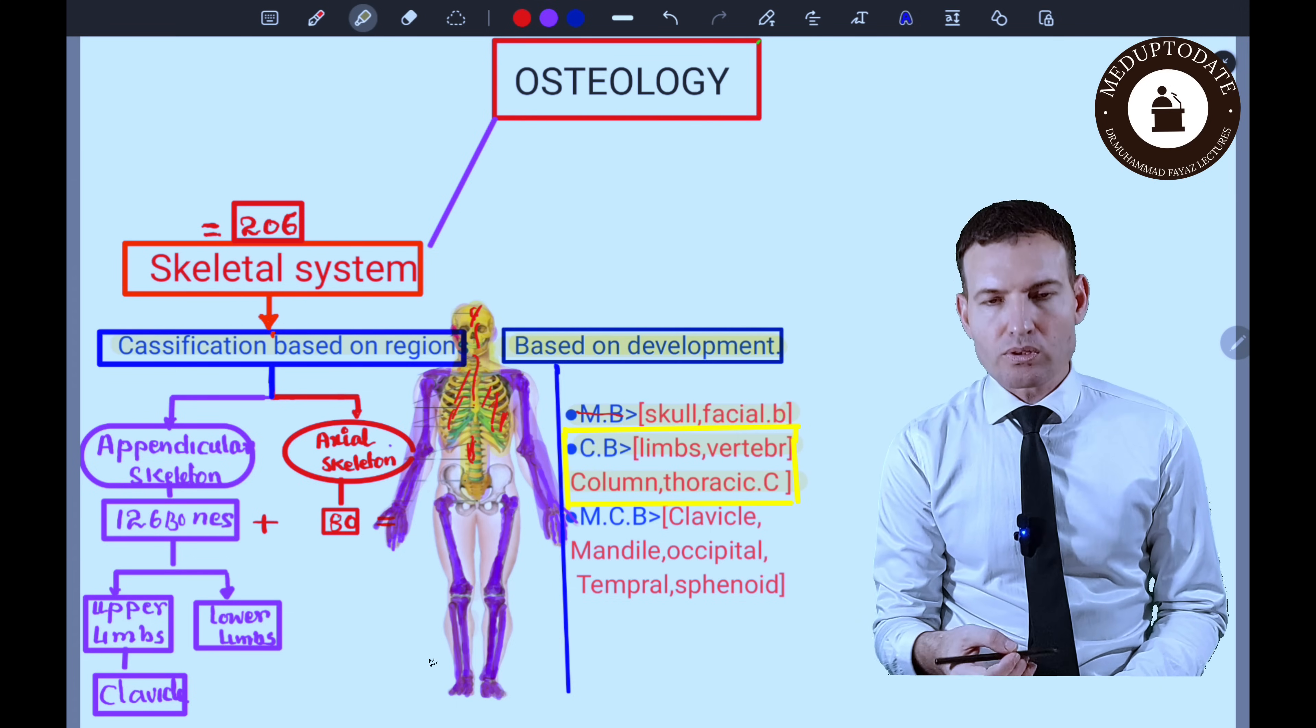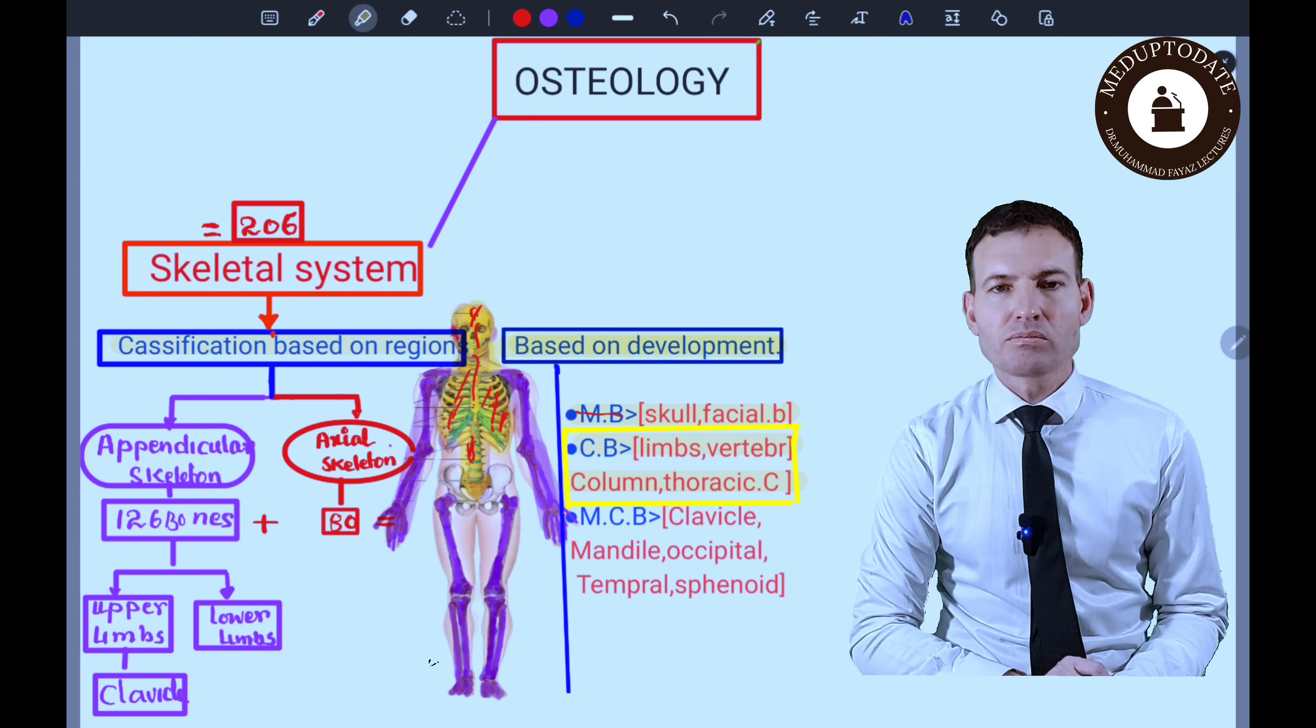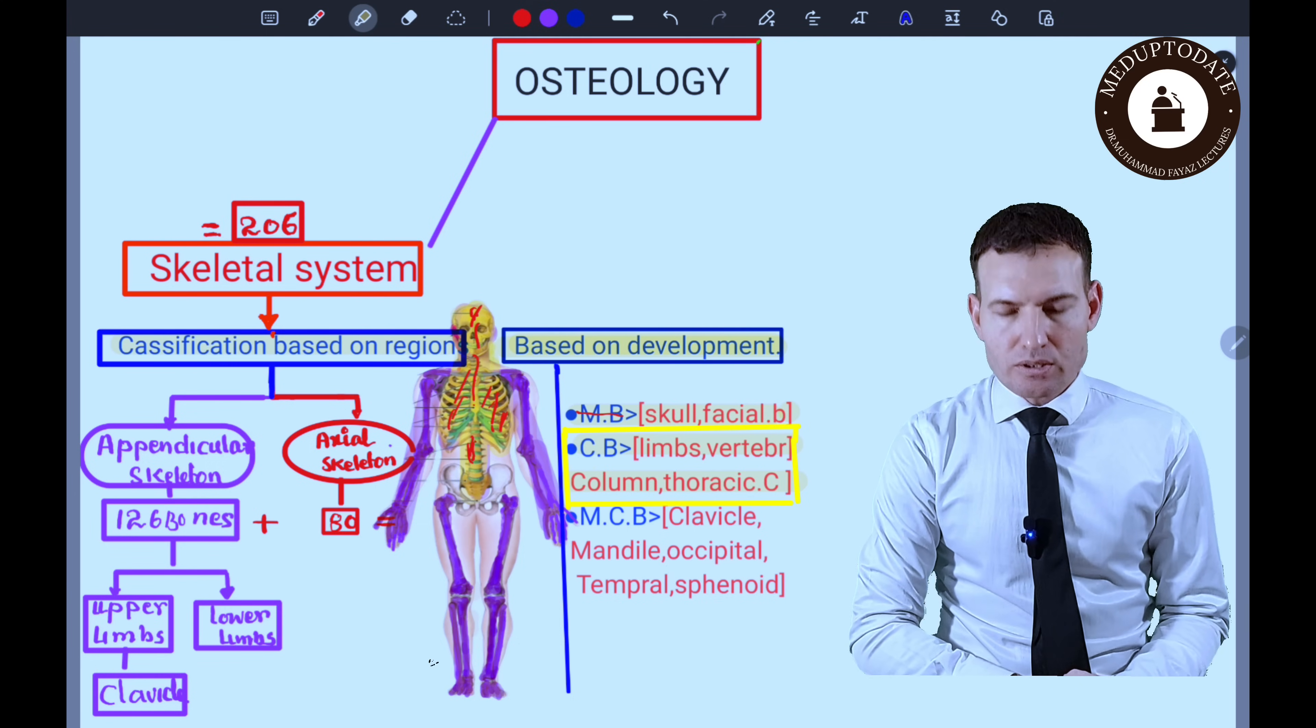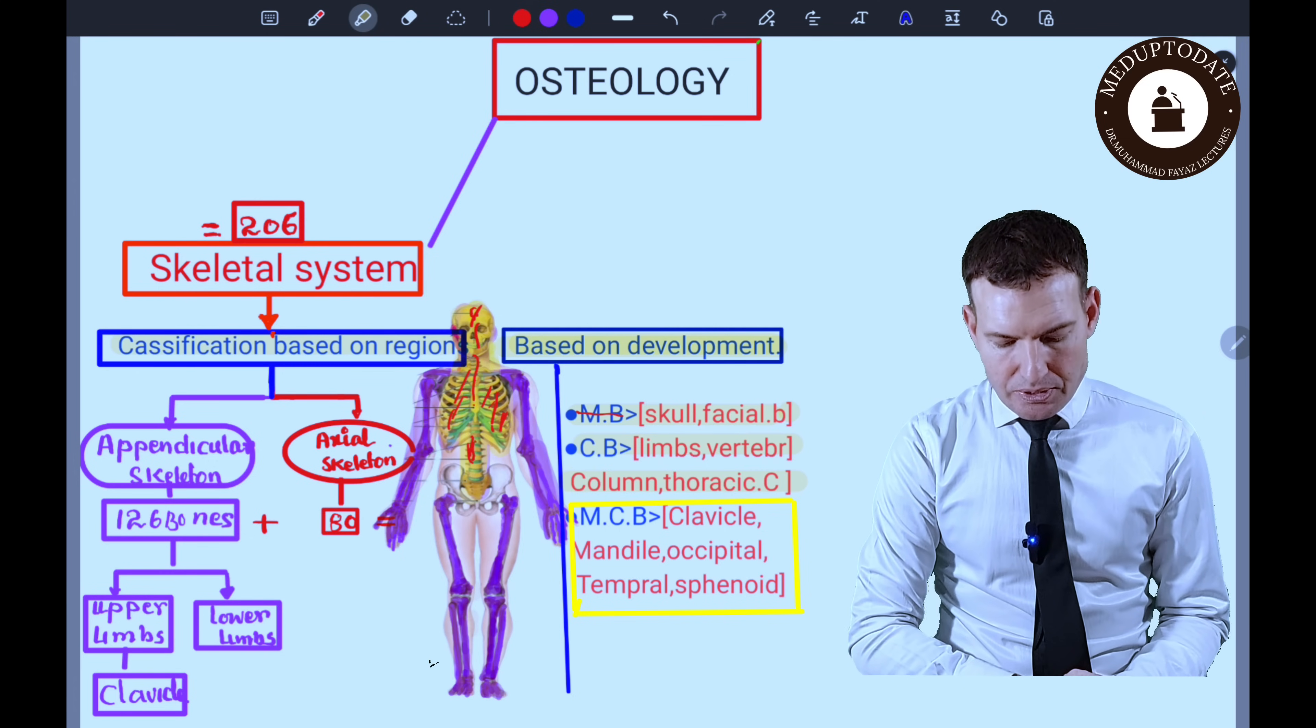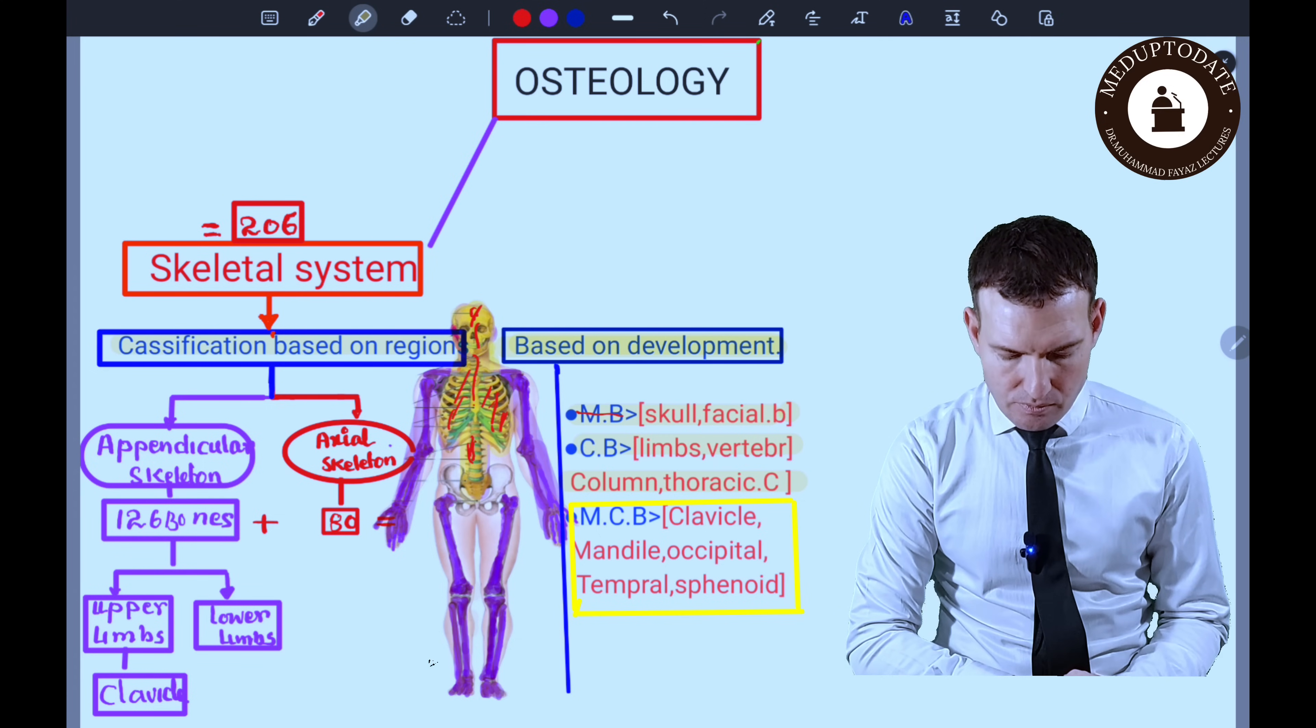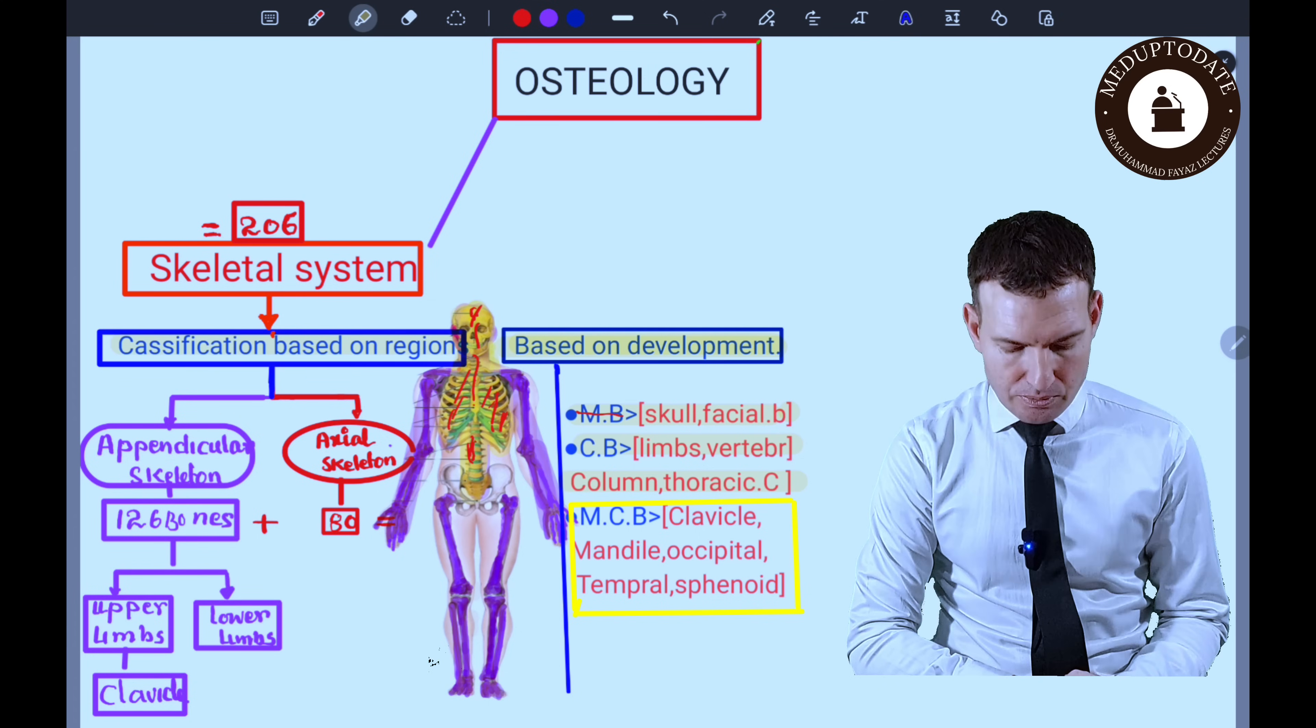Cartilaginous bones, as I mentioned before, most of the bones of the skeleton ossify in cartilage. These are limb bones—bones of upper limb and lower limb—and bones of the vertebral column and thoracic cage. These bones are classified as cartilage. Then we have mixed type of bone and an example of such bone is the clavicle, and that is our main topic and we will discuss later about it in more detail.